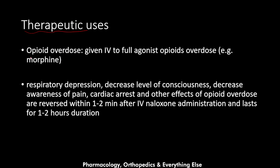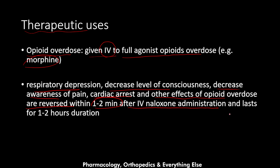Naloxone is used for opioid overdose. It is given intravenously because the IV formula is the fastest, working within one to two minutes. It is used for full agonist opioid overdose, such as morphine. Symptoms including respiratory depression, decreased level of consciousness, decreased awareness of pain, and cardiac arrest are reversed within one to two minutes after intravenous naloxone administration, with effects lasting one to two hours.